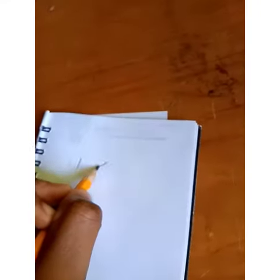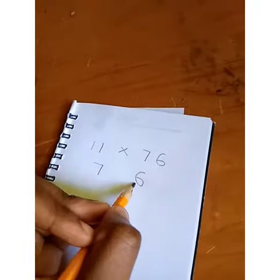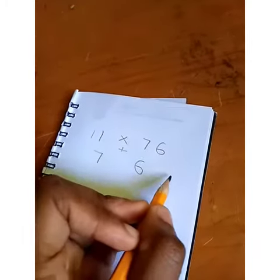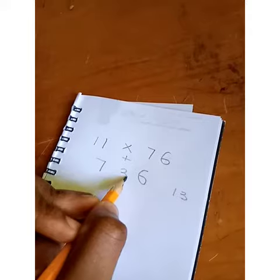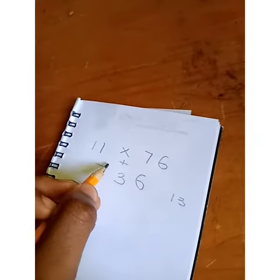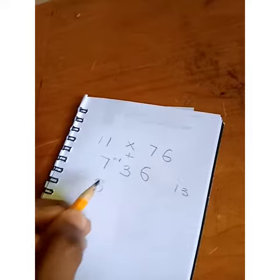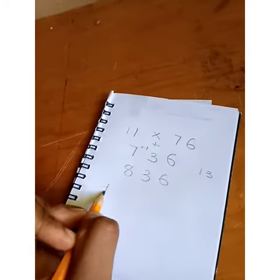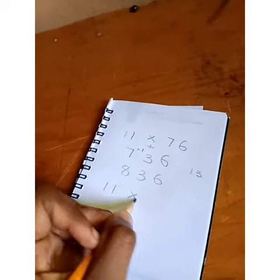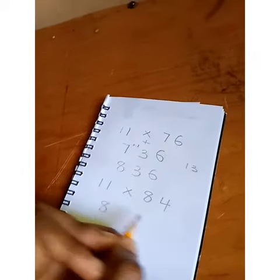Moving on, we have 11 multiplied by 76. Put your 7 and 6 separate from each other as usual and add them. 7 plus 6 gives us 13. Put your 3 right in the middle. Then the 1, you add it to 7. That's 7 plus 1, which gives you 8. So you put your 8 and 4 separate from each other and add.